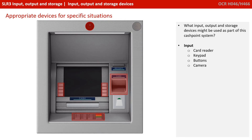We can quickly identify various ways that this system is gathering input from the real world. We have the card reader, we have a keypad, there are various buttons either side of the screen, and there's also a camera at the top for security purposes. All of these are input devices.